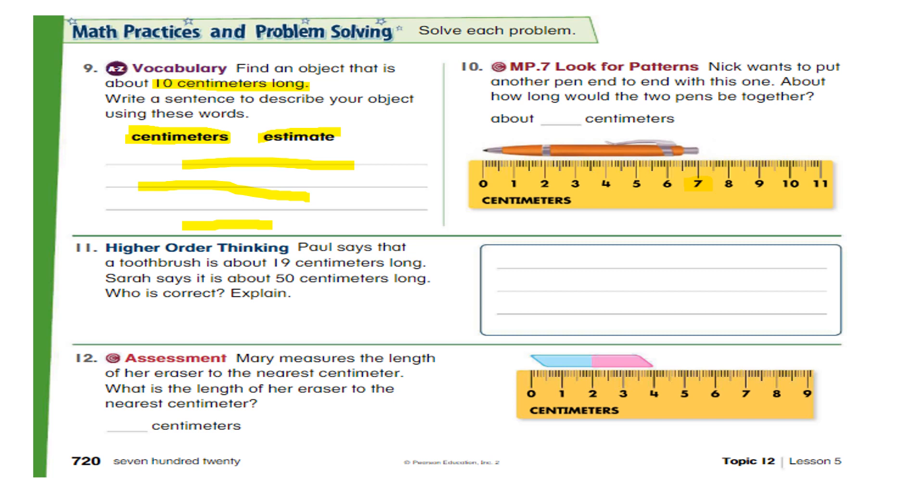Now, what is the meaning of putting another thing end to end? Means like this. He will put another pen like this. And now he wants to know what will be the length of two pens. So simply you can see if one pen is seven centimeters long, so two pens will be how long? Bravo. Very good. Double of seven. Fourteen centimeters long. Excellent.